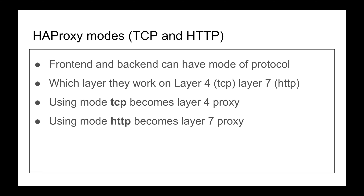Here's the downside of Layer 7 proxies: to look at the data, if you're using TLS you have to decrypt it. That means you're terminating the TLS, and your proxy is looking through your data. HAProxy, nginx, Caddy — pretty much all of those look through your data.